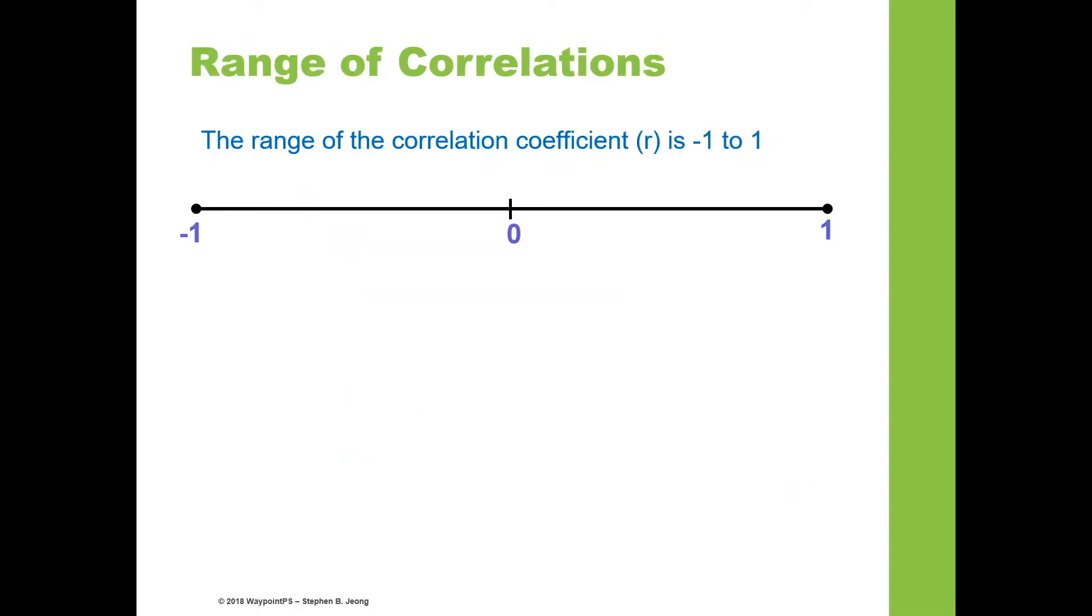In terms of the range of the correlation coefficient, it goes from minus 1 to plus 1. Minus 1 indicates a perfect negative correlation, meaning that as the value for one variable increases—in this case x on the horizontal axis—the value for the other, the y variable, decreases.